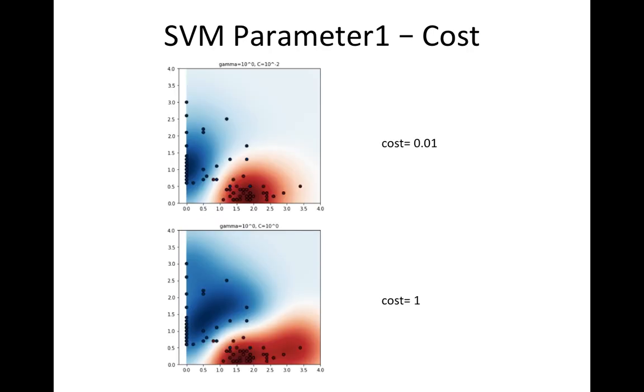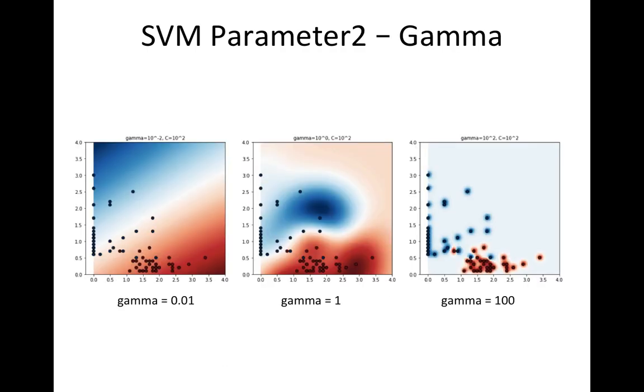This is the visualization. The upper one has cost of 0.01, the lower one has cost of 1. In the upper one, we can see a naive decision boundary. Conversely, we can see a more complex decision boundary in the lower one.